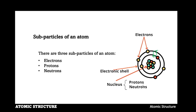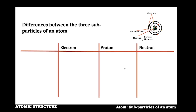Protons and neutrons can be found inside the nucleus. Electrons can be found outside the nucleus, or on the electronic shell of an atomic structure. This slide shows the significant differences between the three sub-particles of an atom. In terms of unit charge, the electron is negative, the proton is positive, and the neutron is neutral.